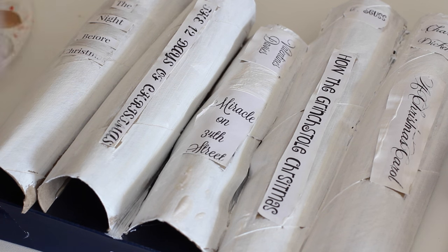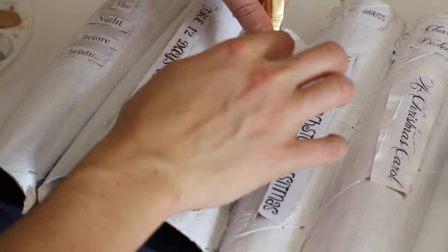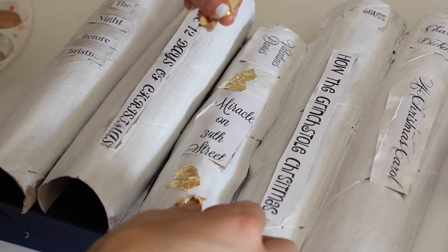I'm using some gold leaf and just kind of staggering it around on a few of the books. You can use whatever you want: different paint, glitter, fabric.